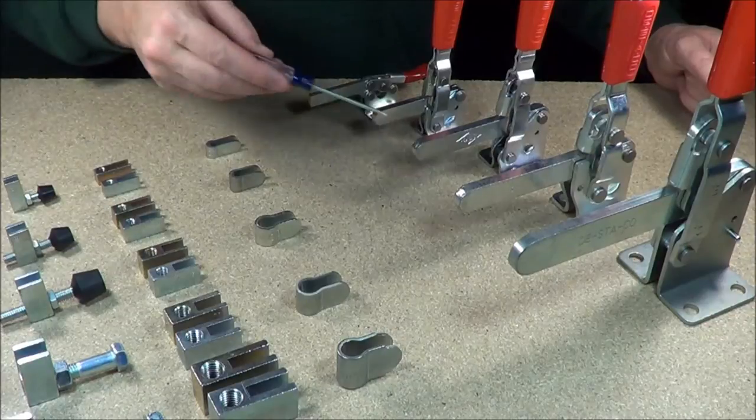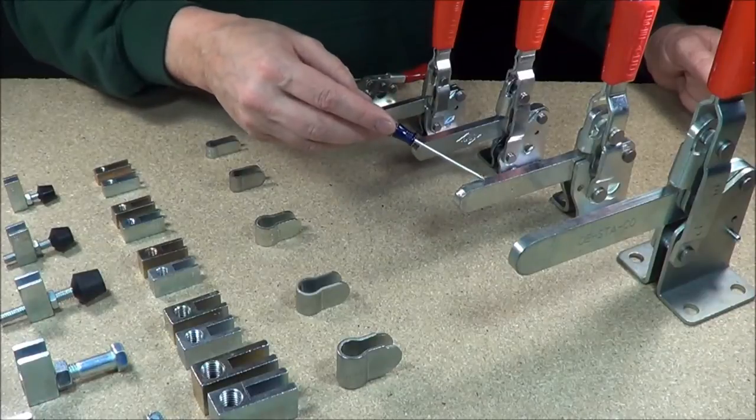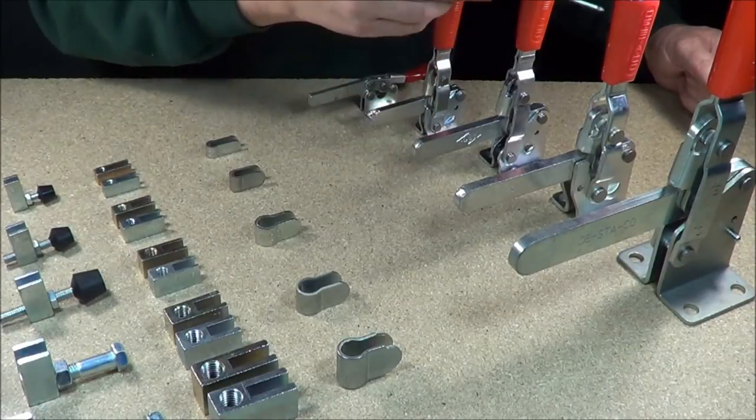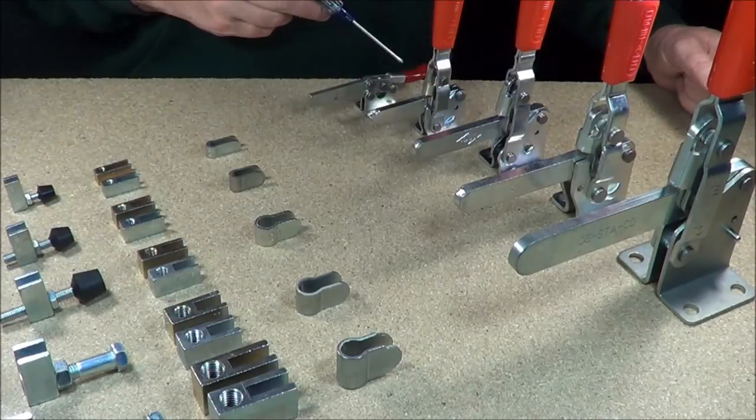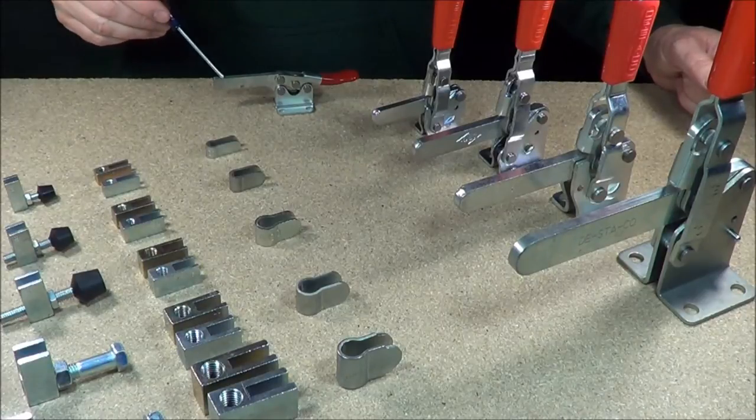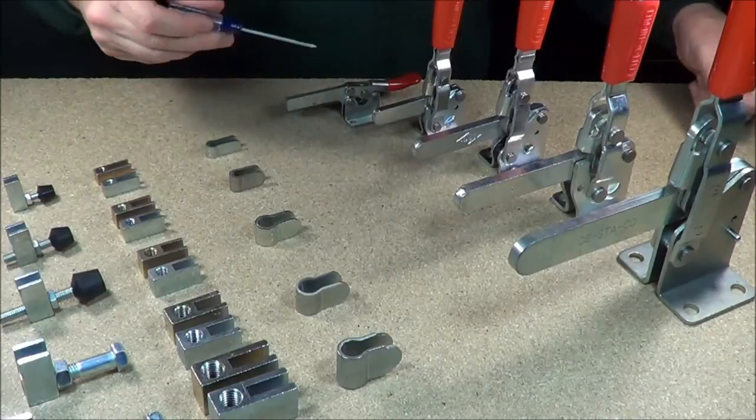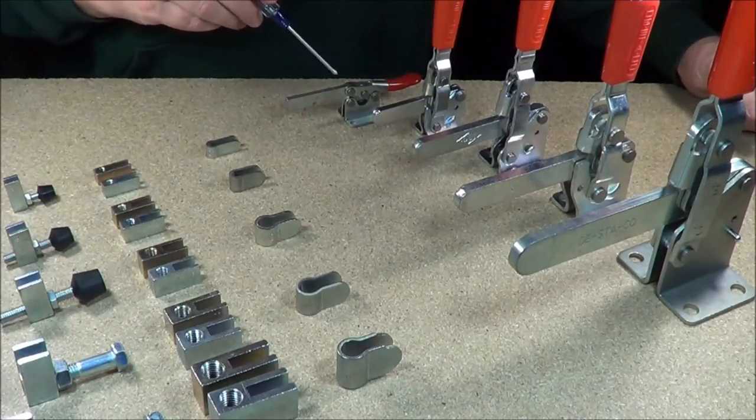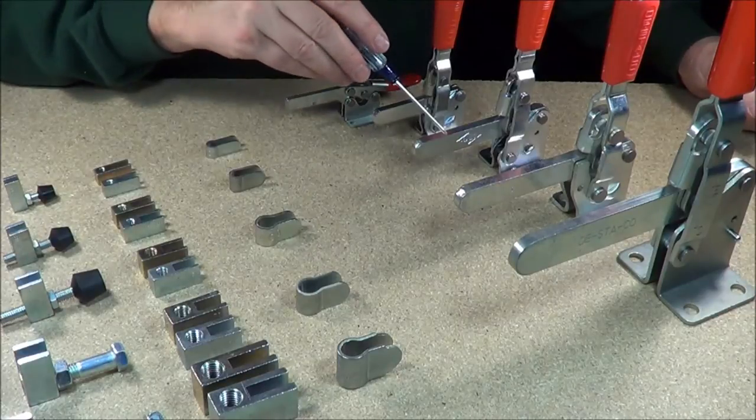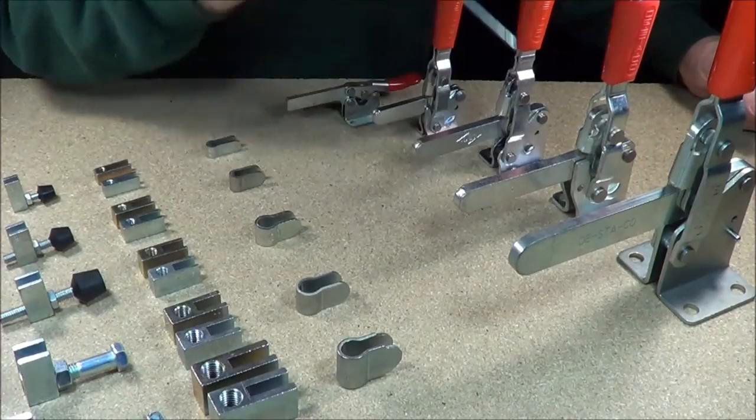These here are Dosteco series toggle clamps. They are the solid arm. When you see this thing here being solid, that's a solid arm toggle clamp. This is a vertical series clamp. This is a horizontal handle. This is five different varieties. This here is a horizontal 215. This is a vertical 207, a vertical 210, a vertical 247, and a vertical 267, one of the largest ones around.